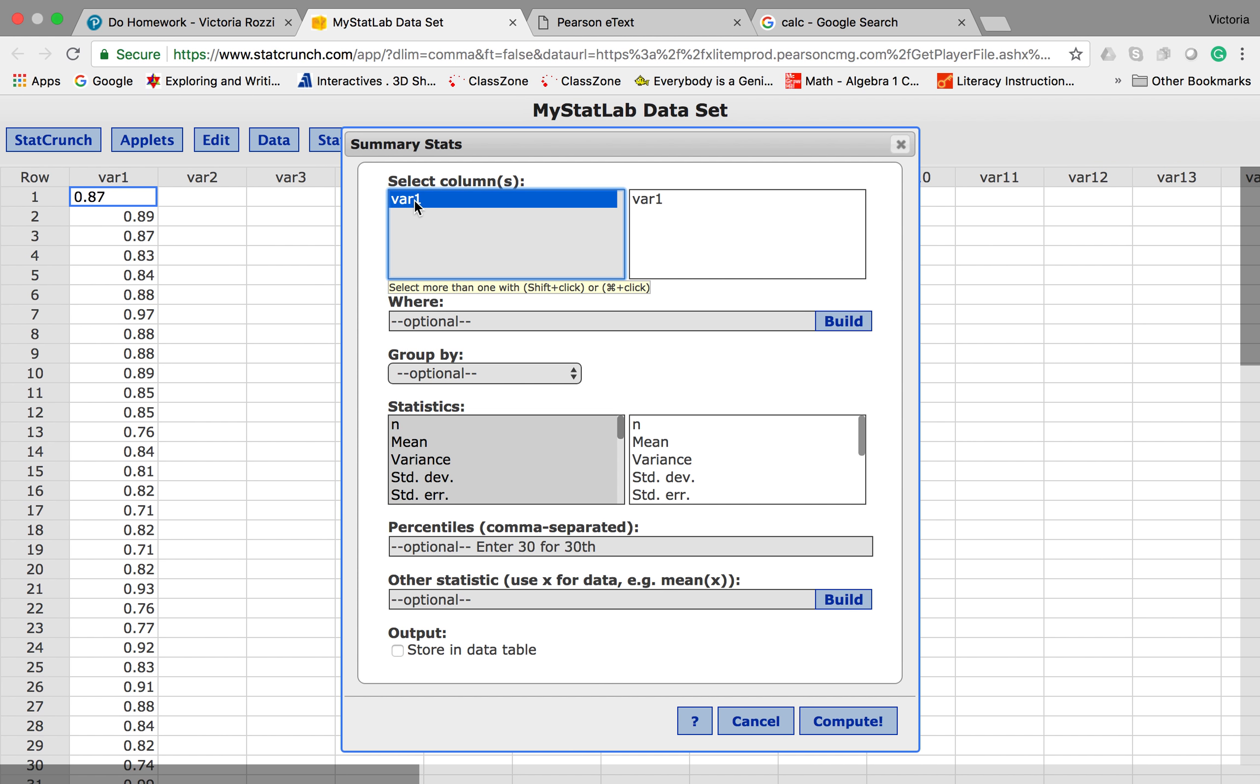We're going to choose that we want to use the column that is marked variable 1, because that's where all our data has been put here, and we would like the standard deviation.